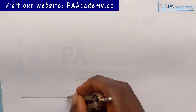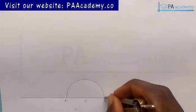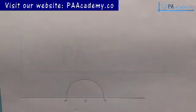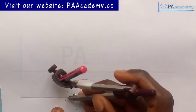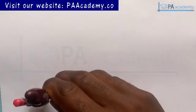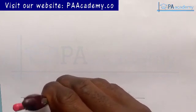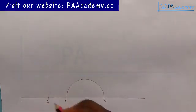Point A is where the semicircle touches our horizontal line and point B is the other end. With the same compass length used in drawing the semicircle, come to point A and mark an arc towards your left. Let me call that point C.